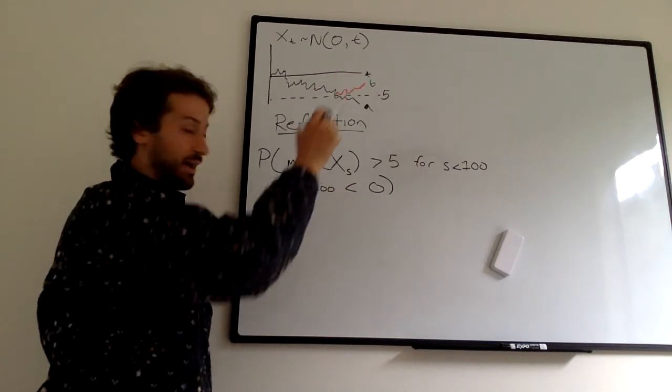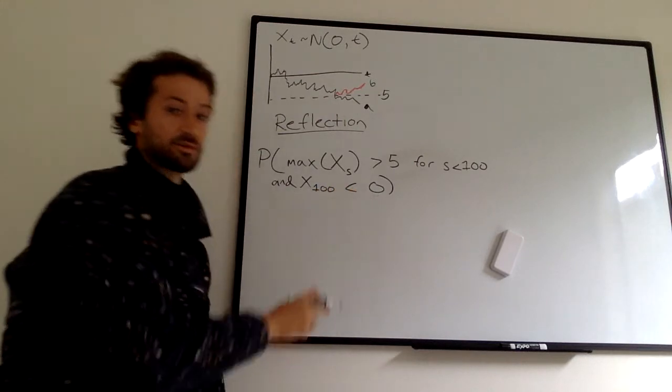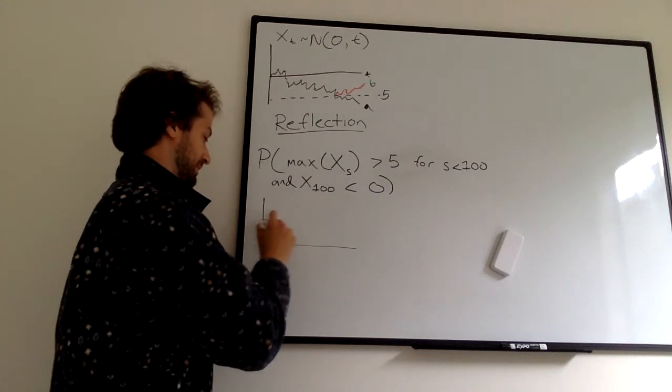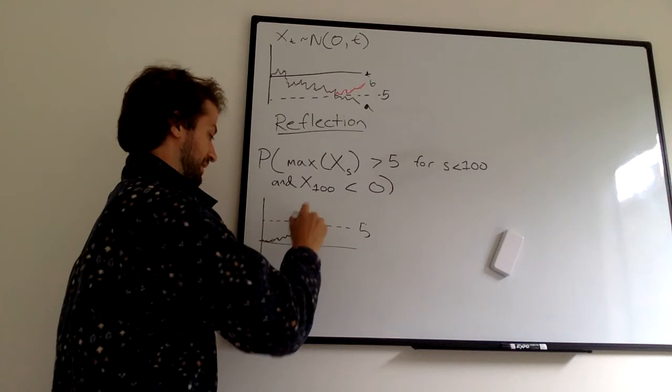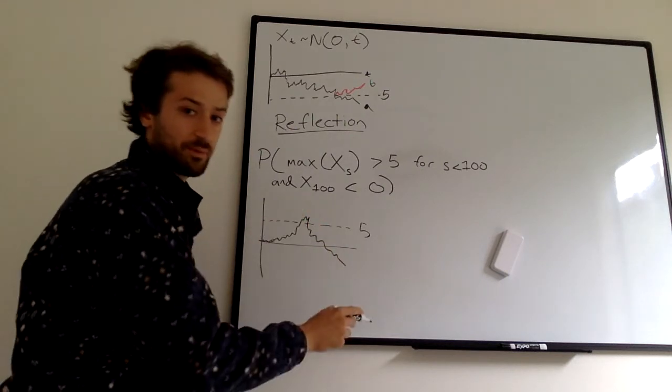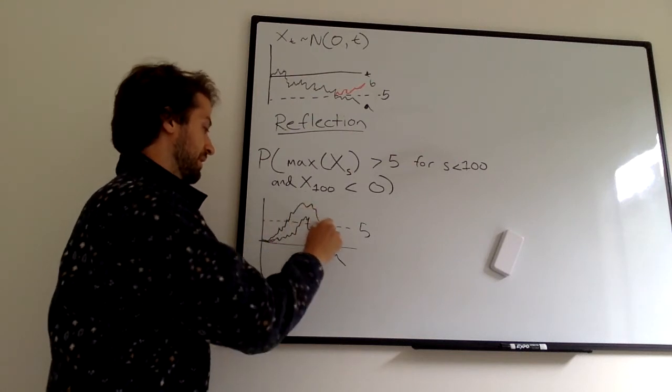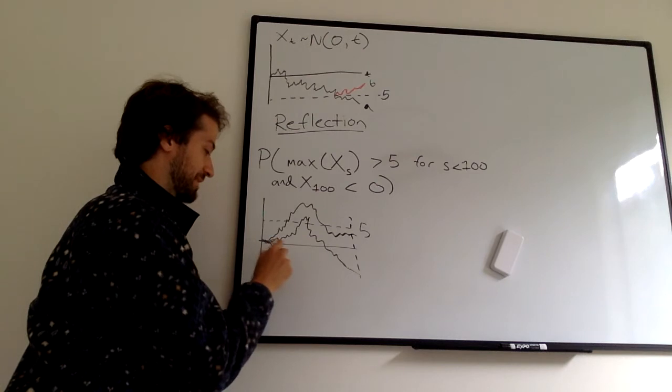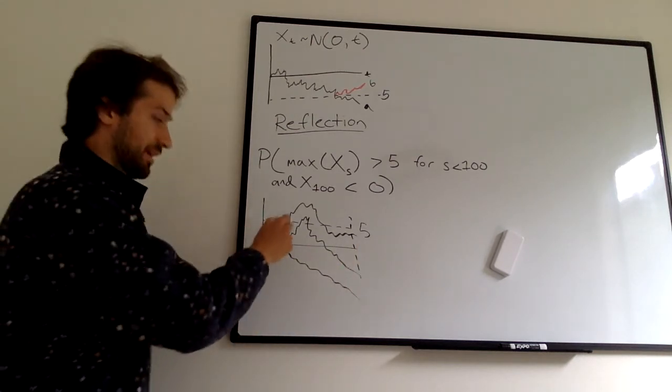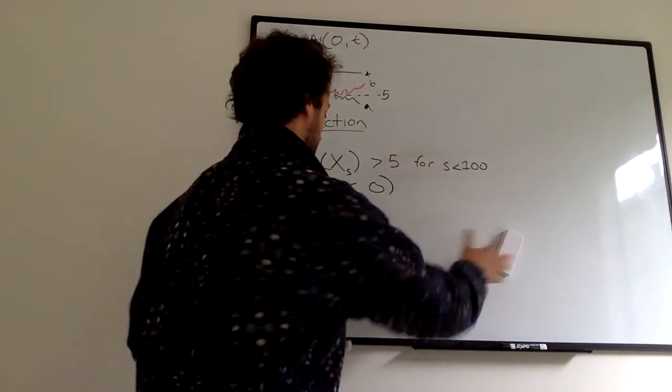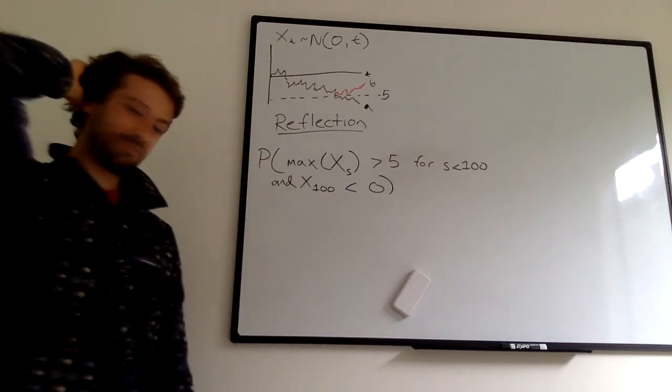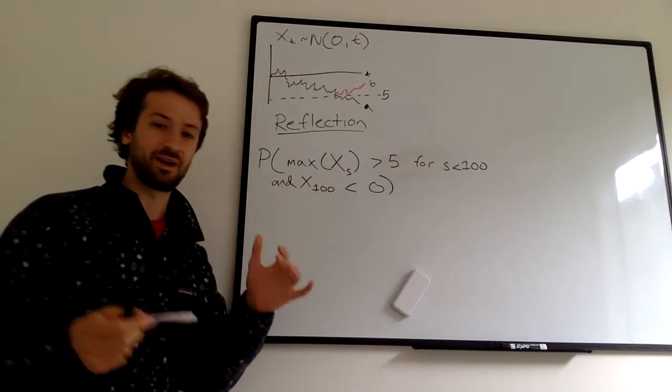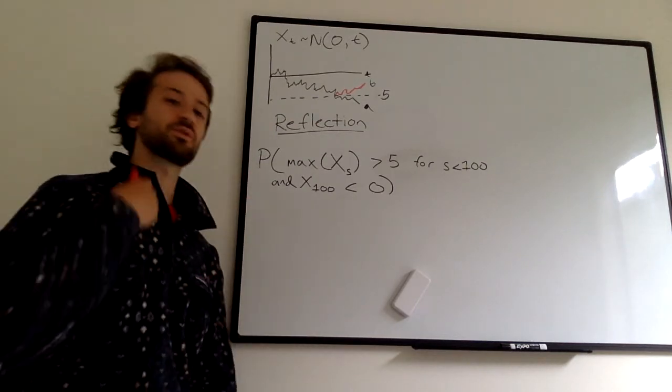What's the probability of that? Here's an example of a process that would achieve that: it hit five, went above five, then went below zero. This is an example of a process that would not achieve that: this process hit above five but didn't end below zero. Here's a process that never hits five and ends below zero. You have to hit five and then end below zero. This is difficult to solve because it could hit five at any time up until time 100. Do I have to do some sort of integral? It just seems like a total mess.